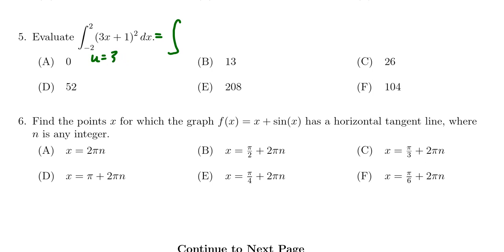I'm just going to FOIL this thing out though. If you FOIL (3x + 1)², you end up with 9x² + 6x + 1 dx right here.